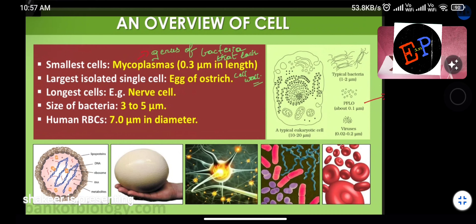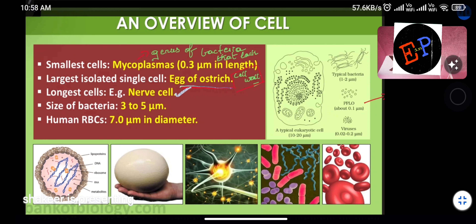The smallest cell is Mycoplasma — a type of bacteria — with a size of 0.3 micrometers in length. Mycoplasmas do not have a cell wall. The largest single isolated cell is the egg of an ostrich. The longest cells are nerve cells. The size of bacteria is 3 to 5 micrometers.